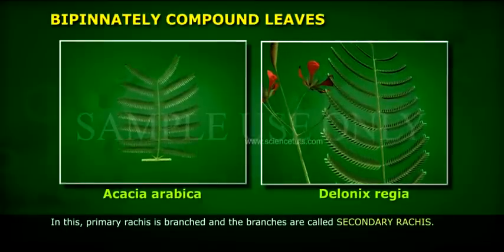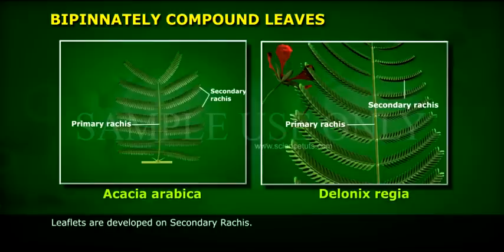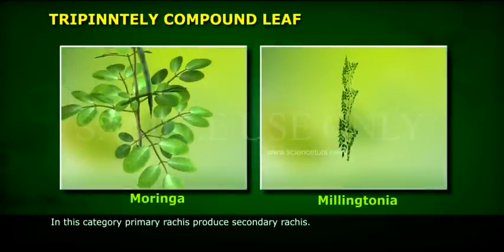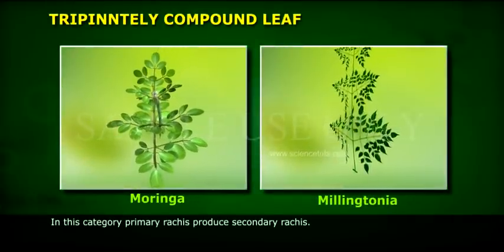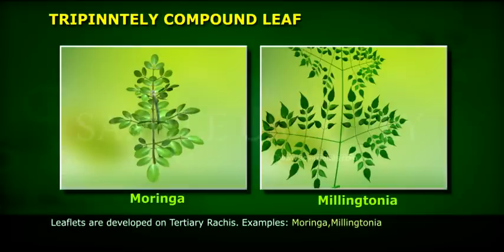Bipinnately compound leaves: the primary rachis is branched, and the branches are called secondary rachis. Leaflets are developed on the secondary rachis. Tripinnately compound leaf: leaflets are developed on the tertiary rachis. Examples: Moringa, Malingtonia.